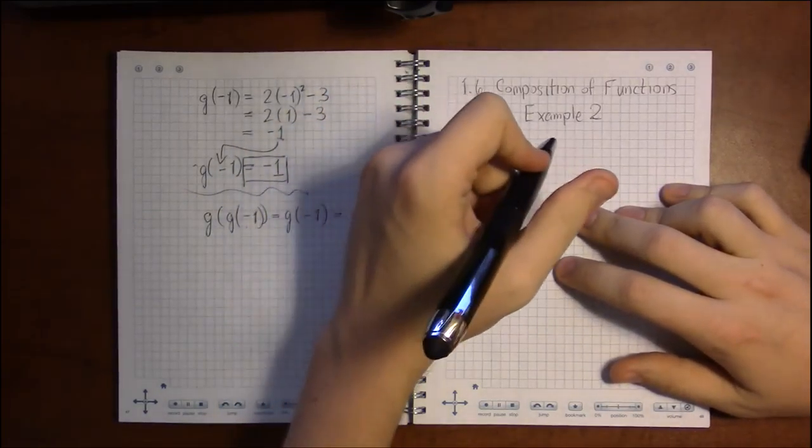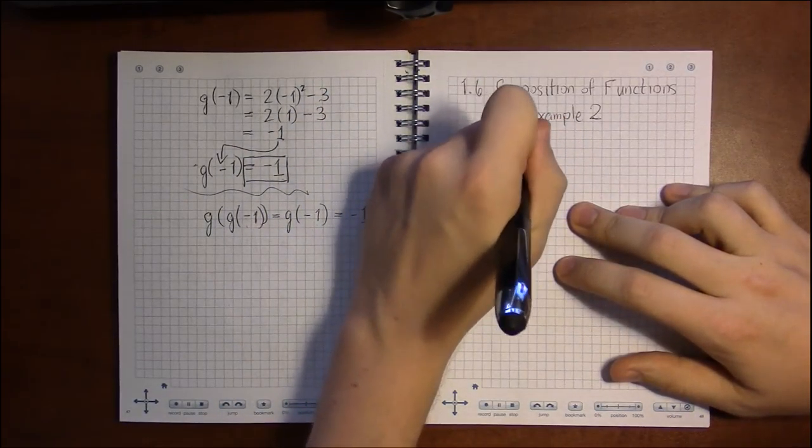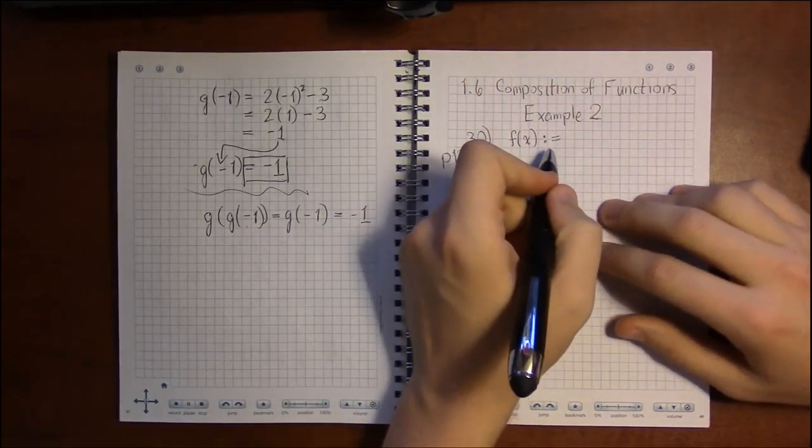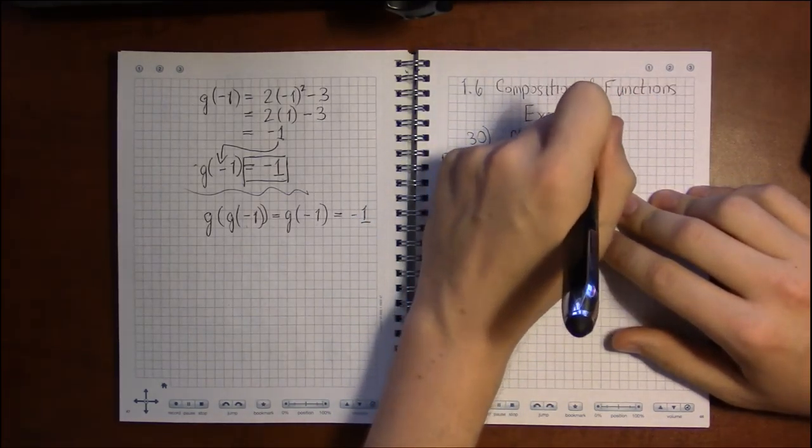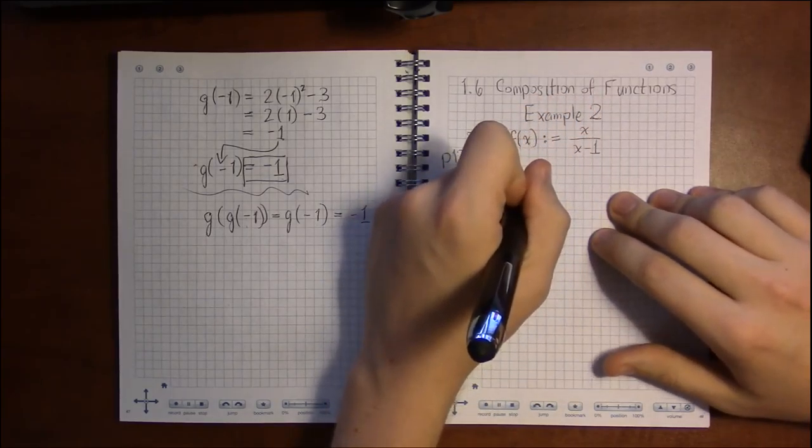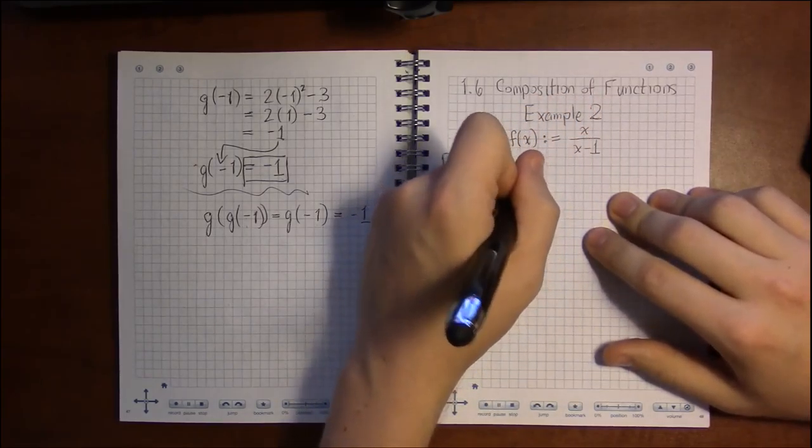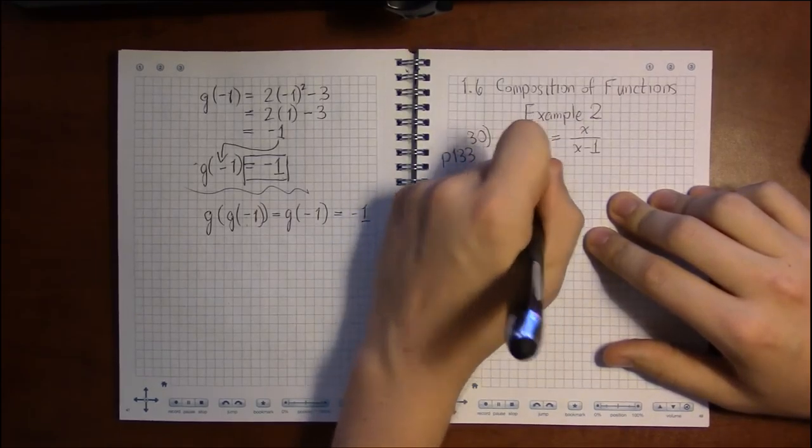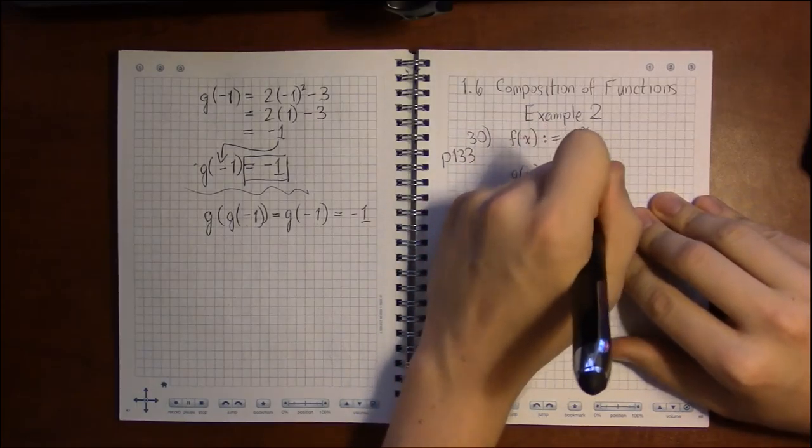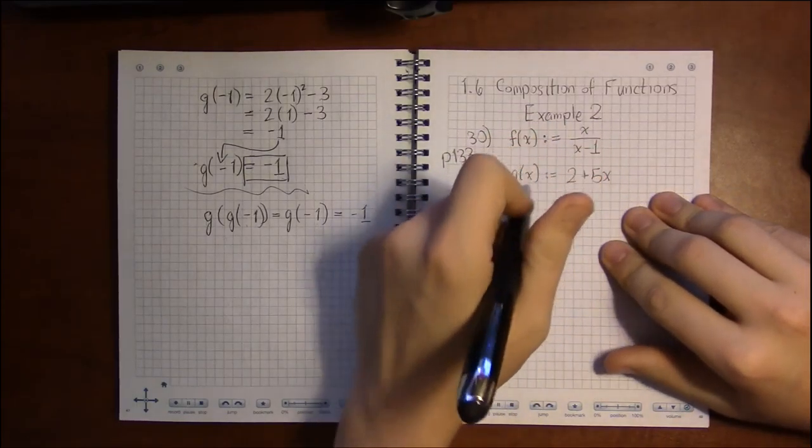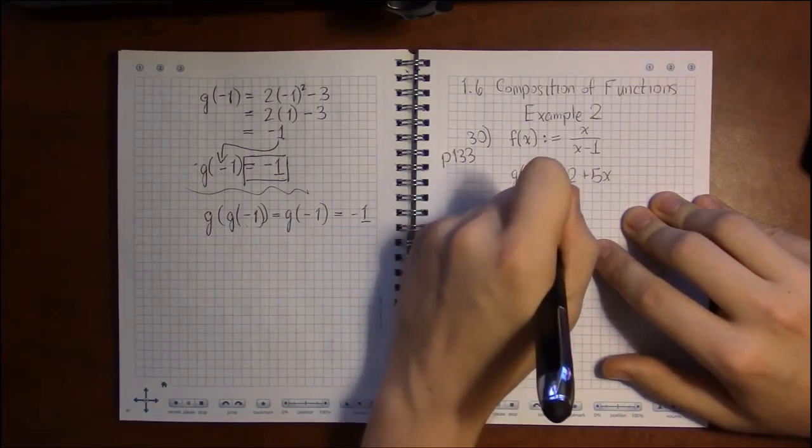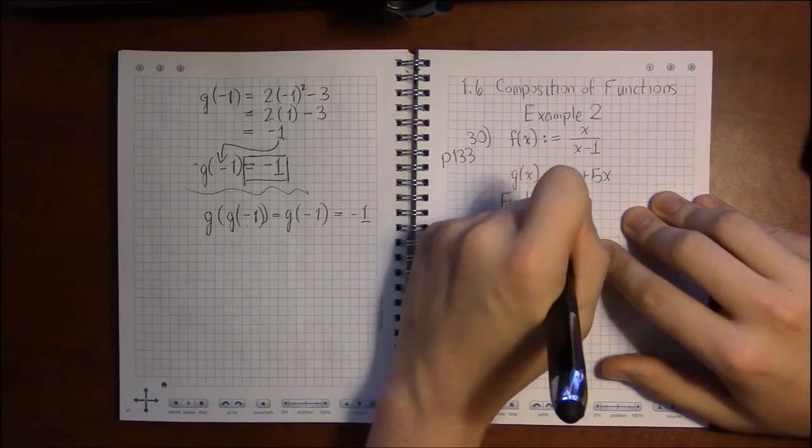In 30 we have f of x being defined as x over x minus 1, and g being defined as 2 plus 5x. We're asked to find f of g of x and its domain.